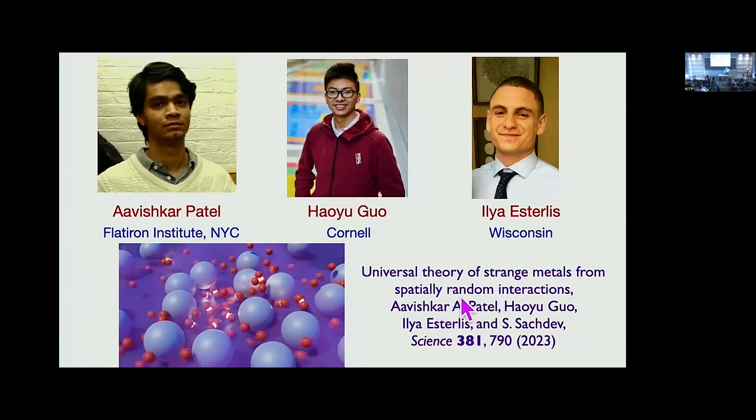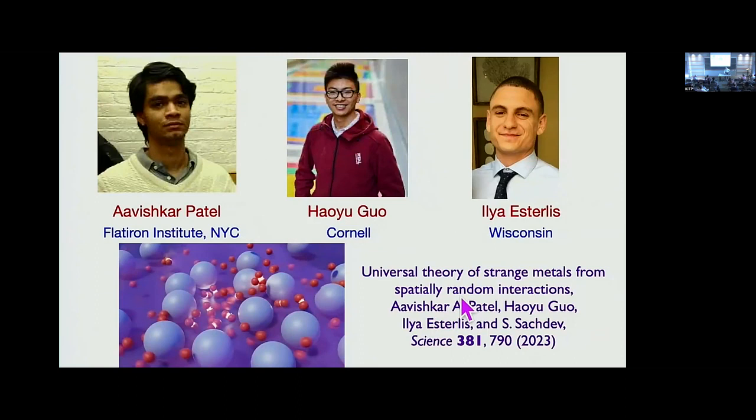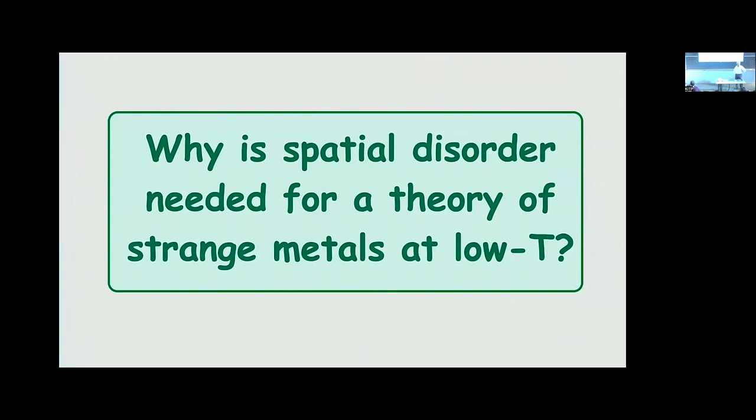As the title says, it's all about spatial randomness to get strange metal behavior. Let me begin with why we think spatial disorder is really ultimately very important for a theory of strange metals. At low temperatures — at high temperatures with very bad metal behavior and very large resistivity it may not be as important — but at low temperatures we believe it's crucial.